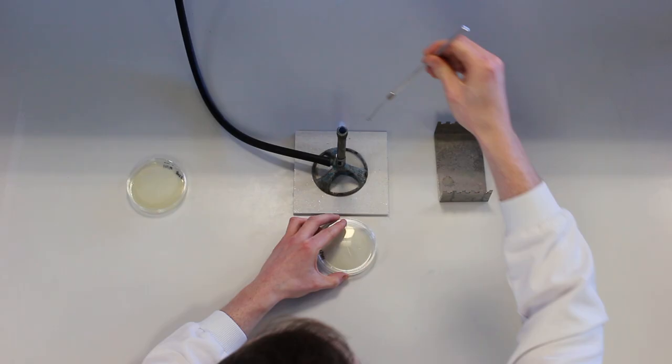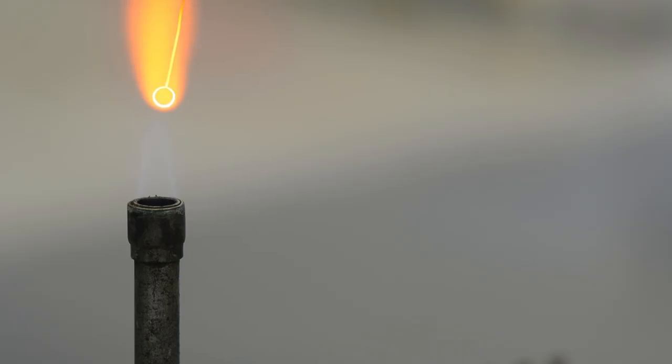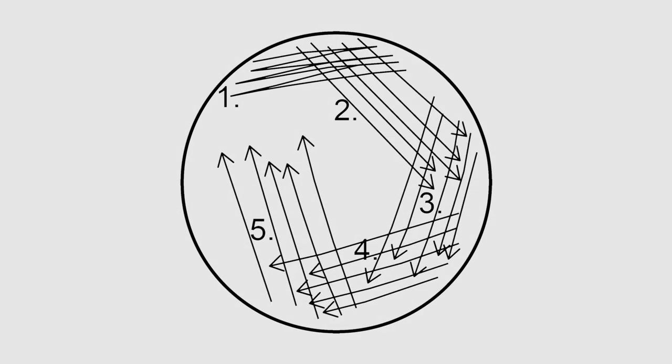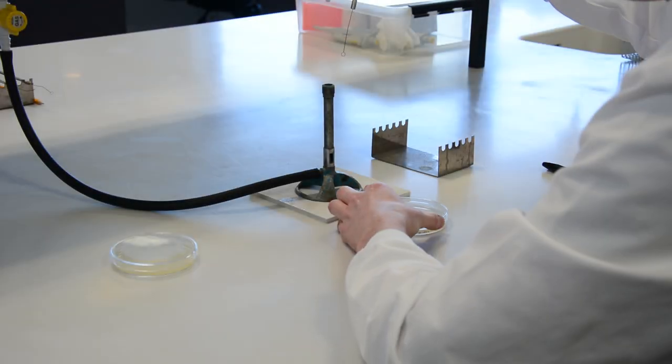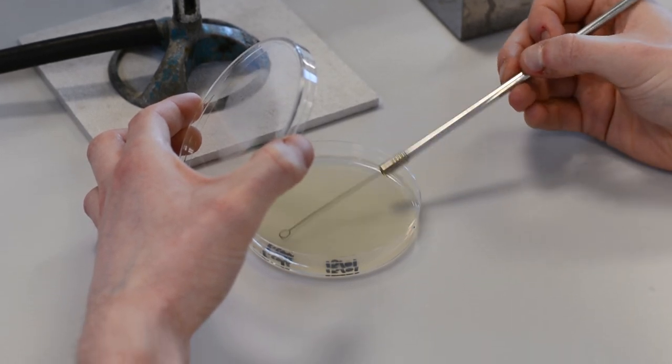The material which we have just transferred to the plate is now known as the inoculum. The loop is sterilized and cooled again before some of the original inoculum is now moved across the plate, as represented by part 2 on the drawing. Make several parallel strokes, a few millimeters apart, covering about a quarter to a third of the plate.